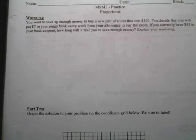You want to save up enough money to buy a new pair of shoes that cost $150. You decide that you will put $7 in your piggy bank every week from your allowance to buy the shoes. If you currently have $45 in your bank, how long will it take you to save enough money? Explain your reasoning.